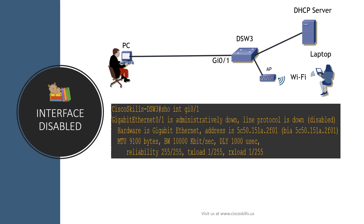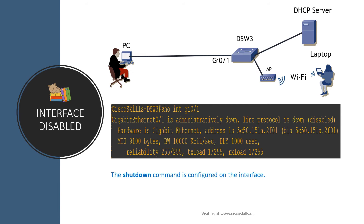In this case, you logged into Cisco switch dsw3 and issued 'show interface gi0/1', and you see the interface is administratively down, the line protocol is down, and the interface status is disabled. From the table, you can figure out that the shutdown command is configured on the interface.